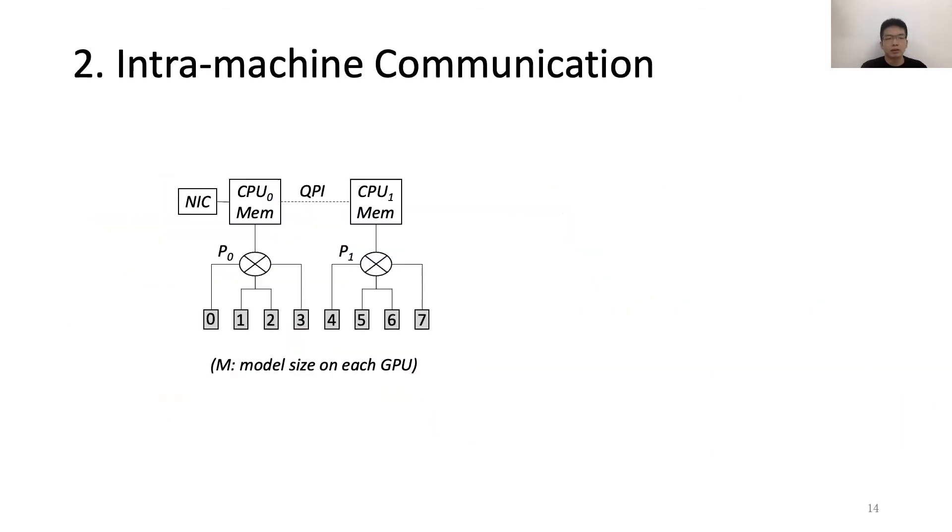Next we move on to the intra-machine communication. We use this topology with 8 GPUs as an example, since it is widely used. In this topology, there are multiple links with different bandwidths. And we find that the bottleneck is the link between the CPU and PCIe switch.